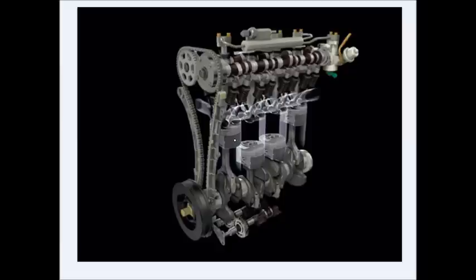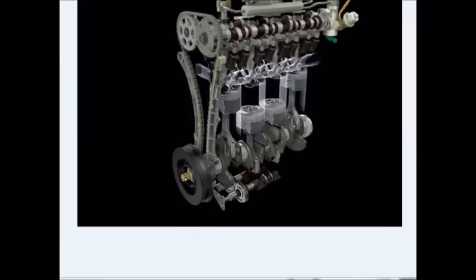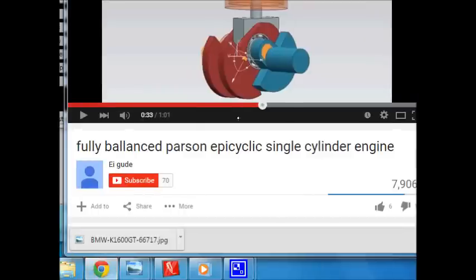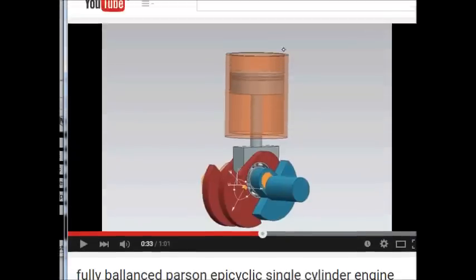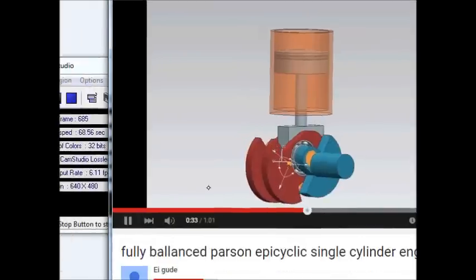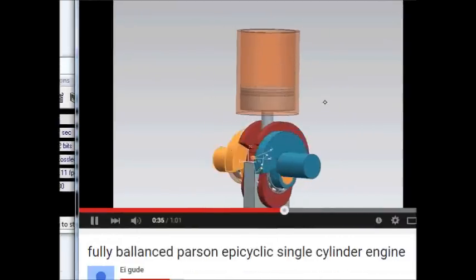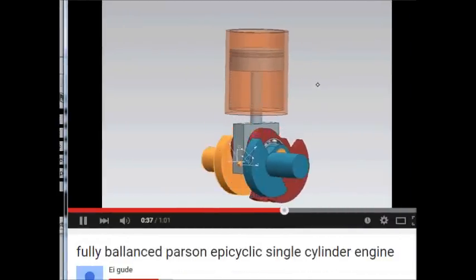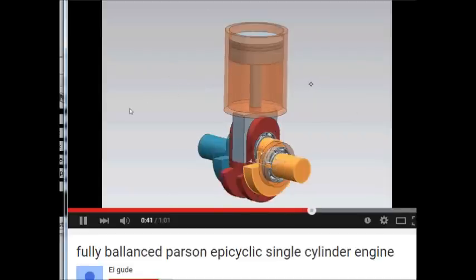An engine consists of a number of what are called slider crank mechanisms that are arranged in sometimes four-cylinder, six-cylinder, eight-cylinder arrangements. Let's take a look at a single-cylinder engine animation that I got from YouTube. Here's an animation of an engine.